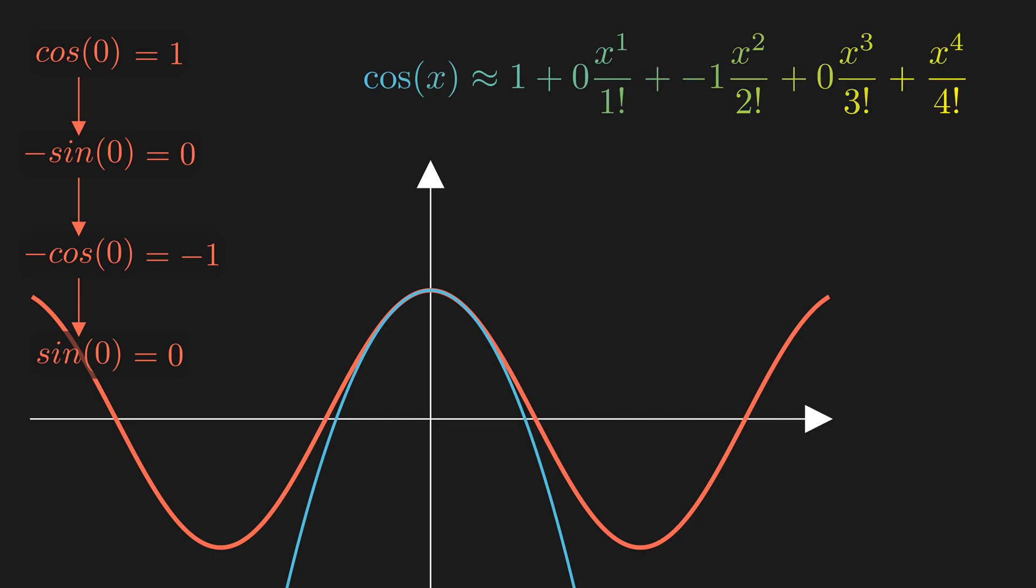Let's add the fourth degree term. The fourth derivative of cosine is again cosine. And its value is 1, so the coefficient of this term is 1. Now the polynomial takes this shape. So by following these same steps, you can find the Taylor series for any function that's given to you.